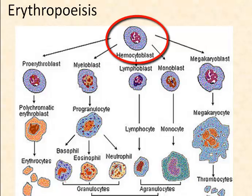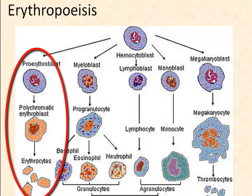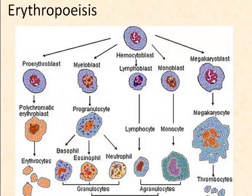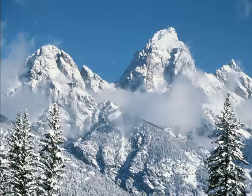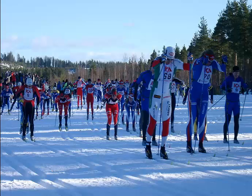All blood cells come from the same stem cells and are made in the bone marrow. Red blood cells mature by the process of erythropoiesis, stimulated by the hormone erythropoietin. Red blood cells have a lifespan of about three months, and new ones are constantly being produced. When we experience chronic lower oxygen levels — as when living at higher altitudes — extra erythropoietin is secreted to stimulate more red blood cell production. For this reason, endurance athletes often train at higher altitude, giving them a higher oxygen-carrying capacity.